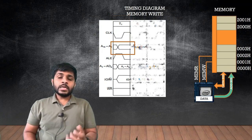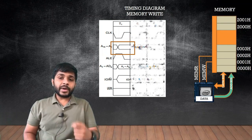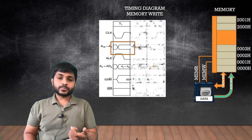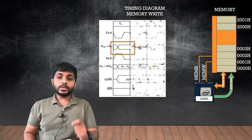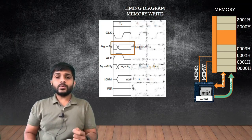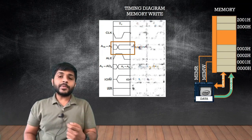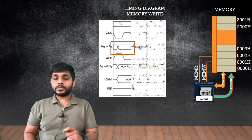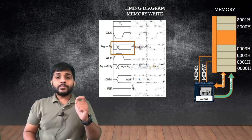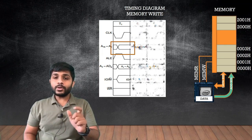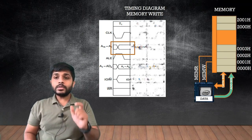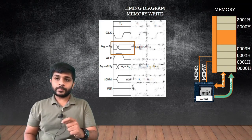There is a higher order bus which is A8 to A15. To write data from the microprocessor to memory, the processor has to send the address of where it wants to store the data, and it will use the address bus to send the address to the memory. The microprocessor wants to write some data in memory location 2000h. The processor will put 2000h in the address bus, but there is a problem: the processor can put the higher order value of the address in A8 to A15, since A8 to A15 is a dedicated address bus.